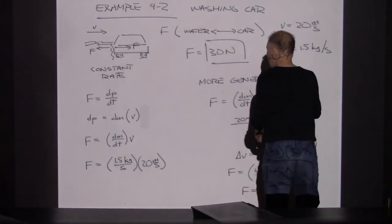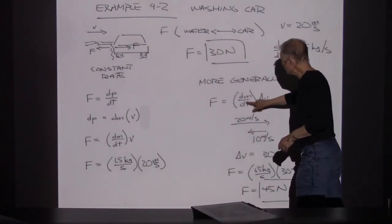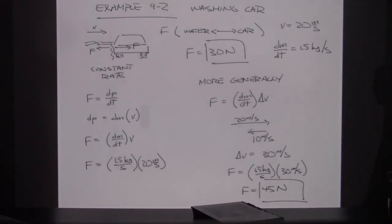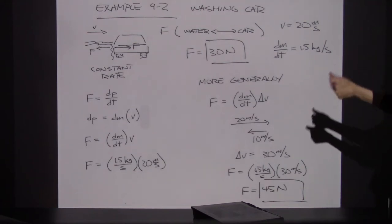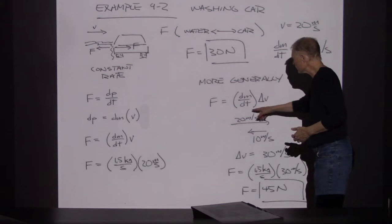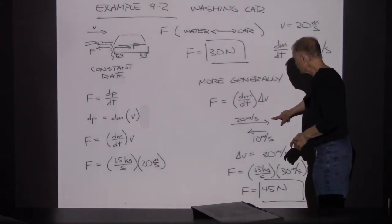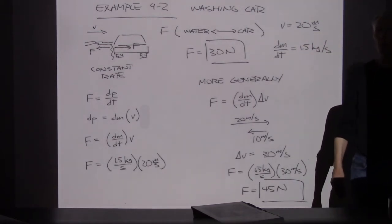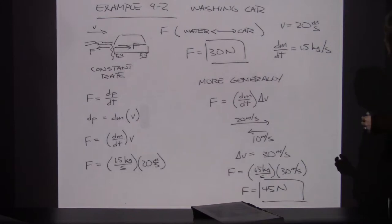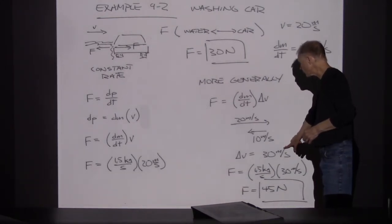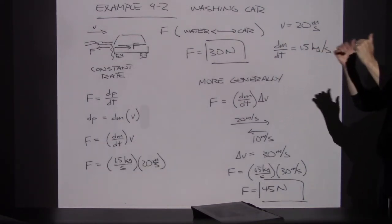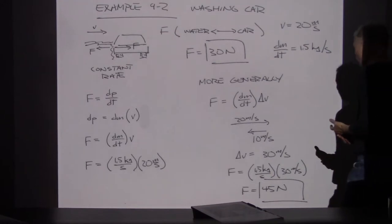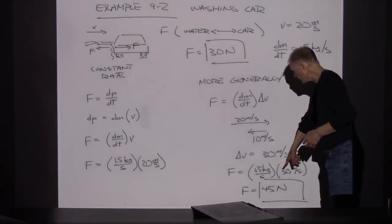More generally, what we could do is say that it's dm/dt times specifically the amount that the velocity changes — so how much does the velocity change between when it comes in and when it bounces off the car? If the water were bouncing off the car and coming back at 10 meters per second, that would be an even larger momentum transfer. So the delta V would be 30 meters per second and the force would be 45 newtons.